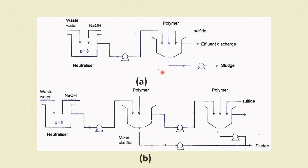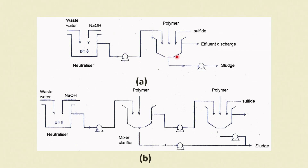Based on these reactions, a schematic treatment program for effluents containing alkali, acid, and alkali wastes can be designed. Wastewater comes in, NaOH is added to reach pH 8, it is pumped into a reactor with polymer input, and a holding tank receives the waste while sulphide is added as a separate stream, with effluent discharge from the outlet.